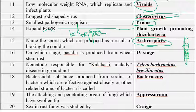Which stage is basidia produced from in wheat stem rust? The stages are: Stage 0 — pycnial or spermatial stage; Stage 1 — aecial; Stage 2 — uredial; Stage 3 — telial; Stage 4 — basidial. The answer is Stage 4. Basidia are produced in Stage 4, and that too in soil.